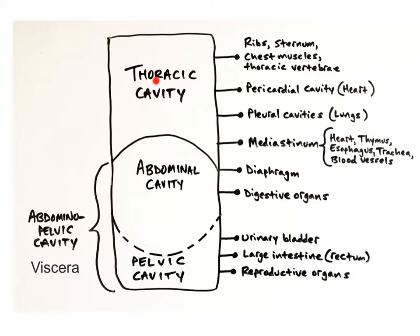The thoracic, or chest cavity, is formed by the ribs, sternum, chest muscles, and the thoracic vertebrae of the vertebral column. The thoracic cavity contains the pericardial and pleural cavities and the mediastinum.